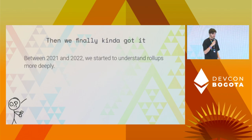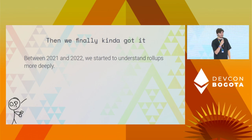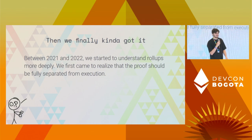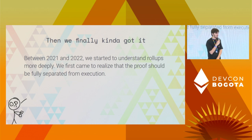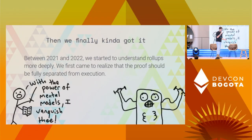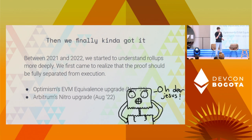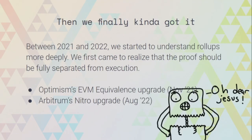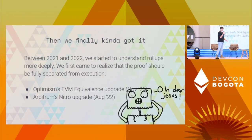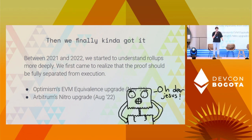Then we finally got it. Between 2021 and 2022, we started to really understand rollups in more detail. The first key realization was that proofs should be separated from execution — we should not allow the structure of the proof to control the behavior of our execution layer. With the power of mental models, we vanquished the monolithic rollups. We got stuff like Optimism's EVM equivalence upgrade and Arbitrum's Nitro upgrade — all the same idea: separate proofs, run the EVM as-built with minimal modifications, and have the proofs be so general it doesn't matter what you do on the execution layer.